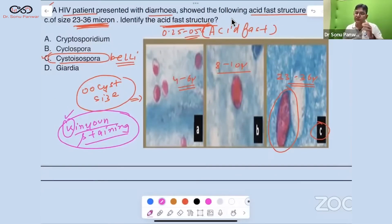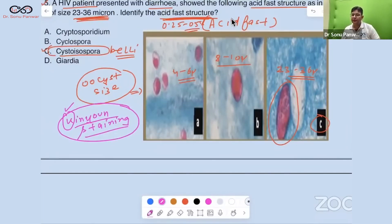Can you tell me in the comment section that which is the most common cause of watery diarrhea in HIV positive out of them? Cryptosporidium, Cyclospora, and Cystoisospora. It is Cryptosporidium parvum. And the Cryptosporidium parvum, the first option, which is having the size of 4 to 6 micron oocyst.